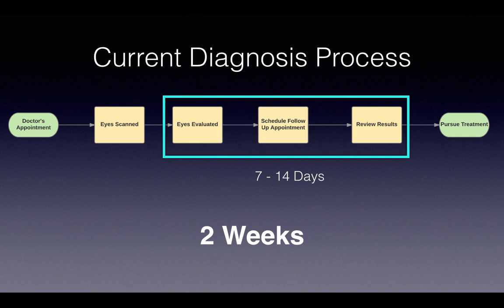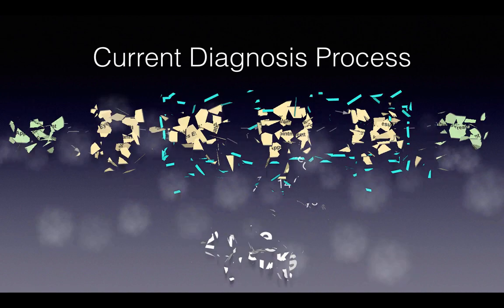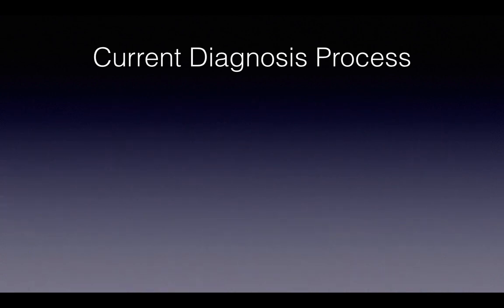As people watching this know, life happens. You get sick, something happens to your significant other or your kid, and you have to reschedule. So the lead time can take anywhere upwards of 7 to 14 days if you've rescheduled. And in 2017, that just isn't a good enough process.